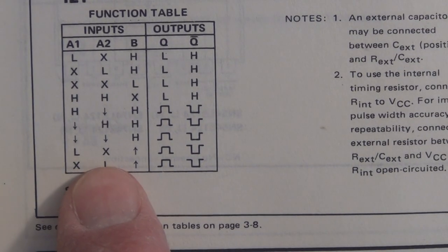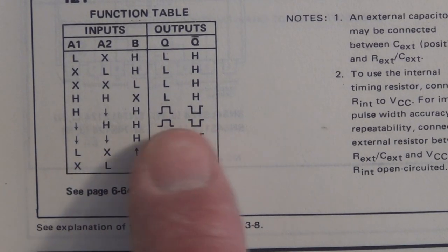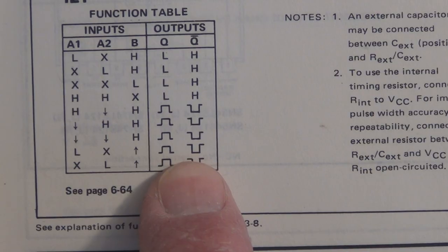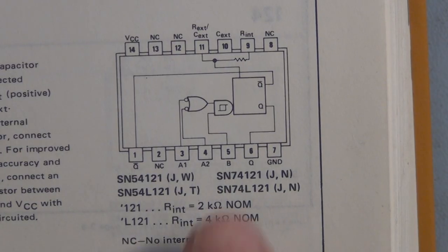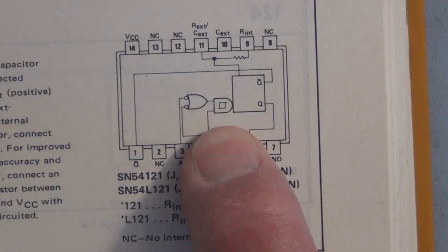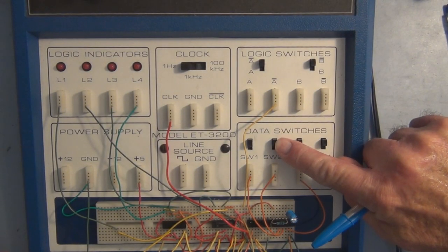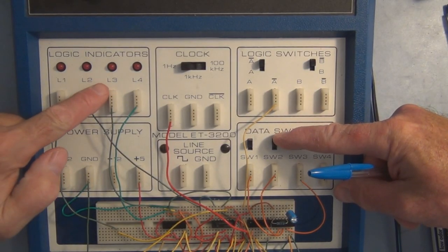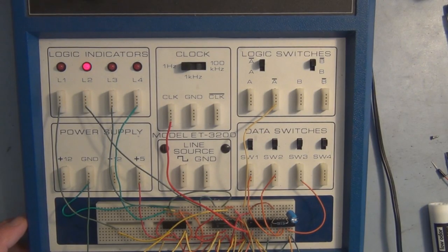And here's the function table that tells you what to apply to A1, A2, and B in order to achieve these different combinations of quasi stable outputs on Q and Q naught. You can see here part of the makeup of a one shot is a Schmidt trigger. So this is the trigger right here and when I trigger the one shot it will start counting and it should stop around 15 seconds.